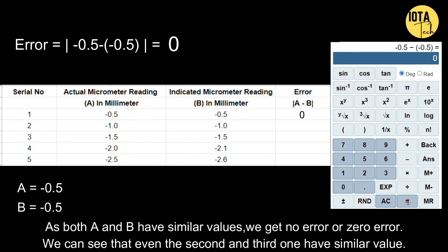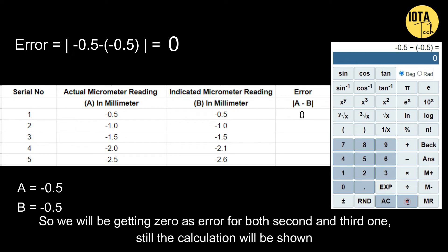We can see that even in the second and the third one, they have similar values for both A and B. So we will be getting zero as error for both the second and the third one.